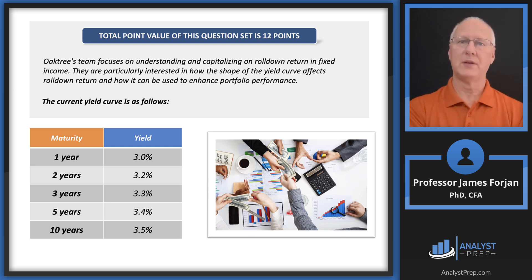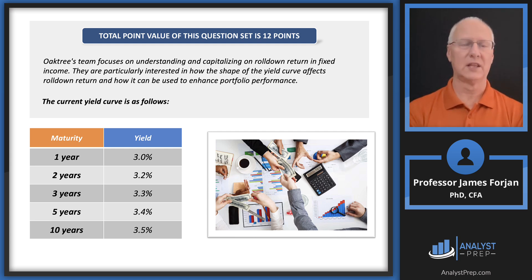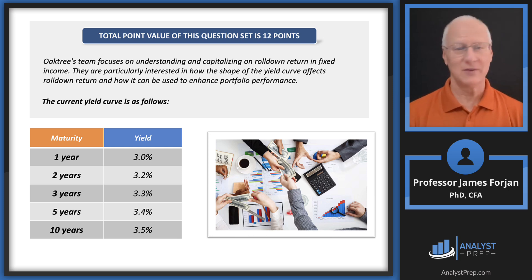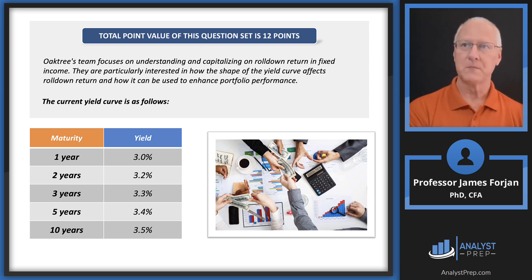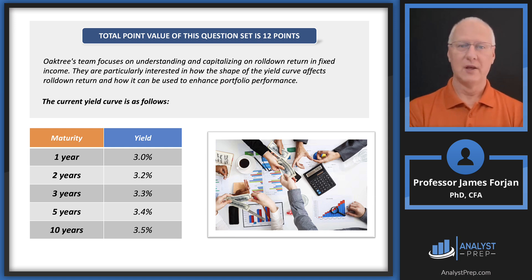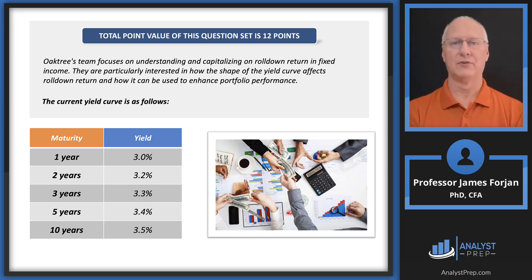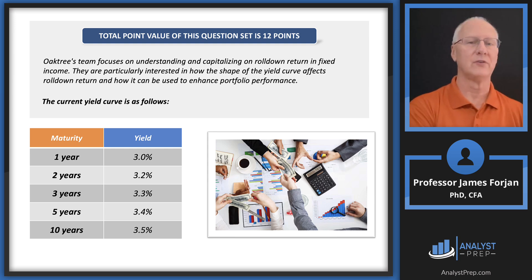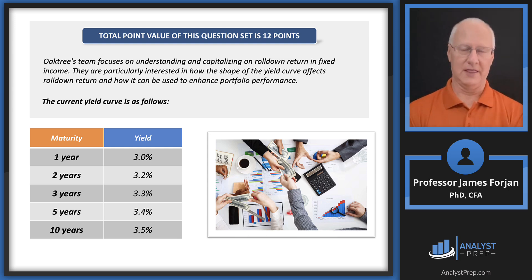So you buy that bond today for, say, $1,002, and you receive $40 coupons each year. After three years — assuming the yield curve stays the same as it was three years ago — you now hold a one-year bond. The one-year spot rate is 1%, so discounting $1,040 at 1% gives you roughly $1,030. You bought the bond at $1,002 and sold it at $1,030. That's the roll-down return.